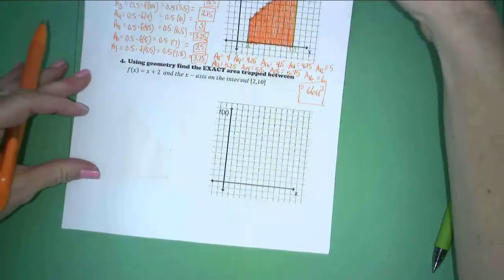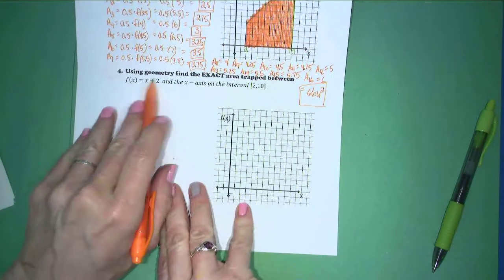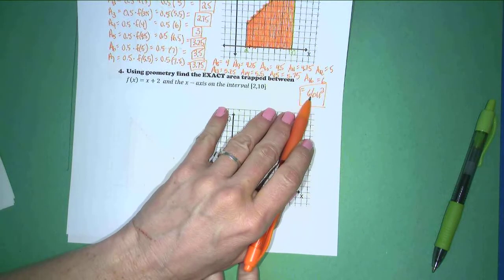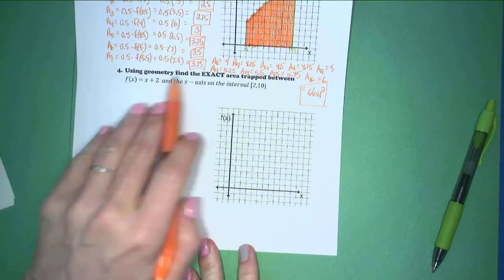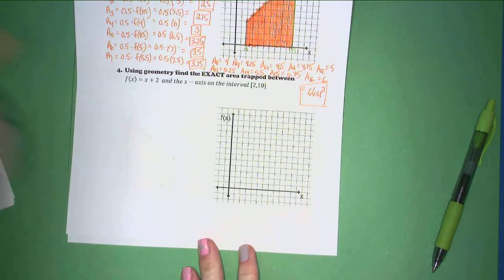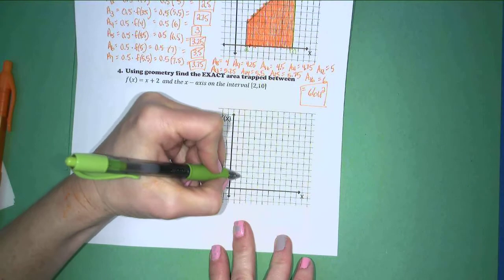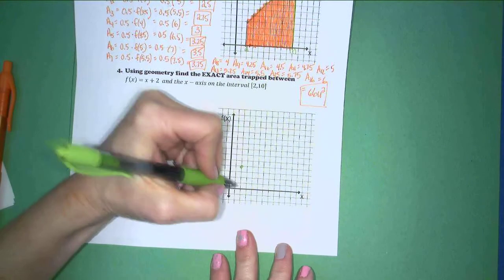Now, number 4 says, go ahead and use geometry now to see how close the 16 rectangles actually got us. So, using geometry is simple. If I just draw this trapezoid one last time from 2, 4 here, all the way out to 10, 12.